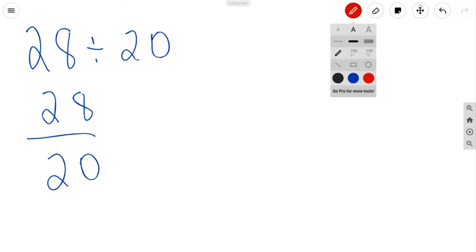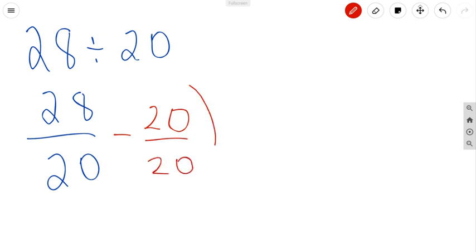So what we're going to do is we're going to say, okay, how many wholes can I get out of 28 twentieths? Well, if I take away one whole, which is 20 twentieths, this is equal to 1. 28 minus 20 is 8 left over, 8 twentieths. So my mixed number is 1 and 8 twentieths.